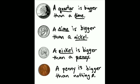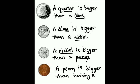And that's it. Let's go ahead and read. A quarter — this is a quarter — is bigger than a dime. That's a dime. A dime is bigger than a nickel. That's a nickel. A nickel is bigger than a penny. That's a penny. A penny is bigger than nothing. And nothing is a big, fat zero.